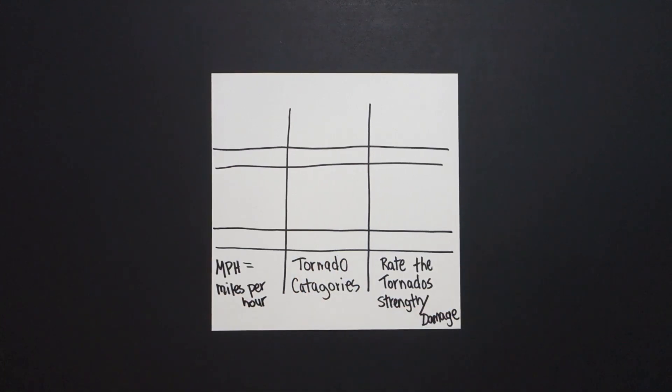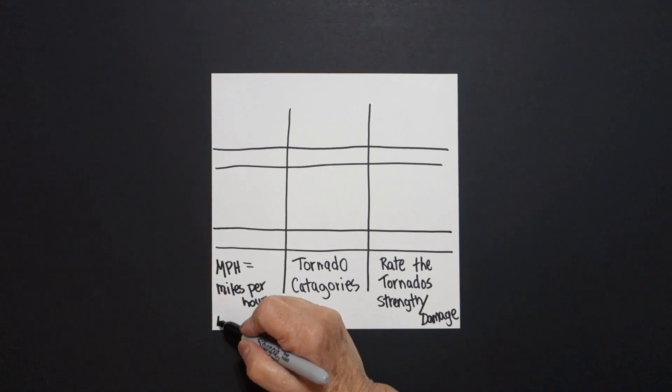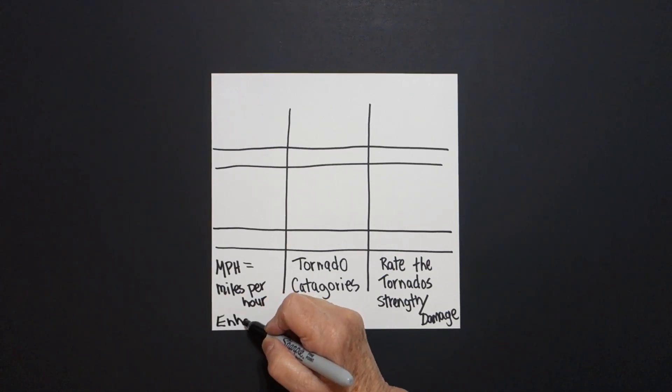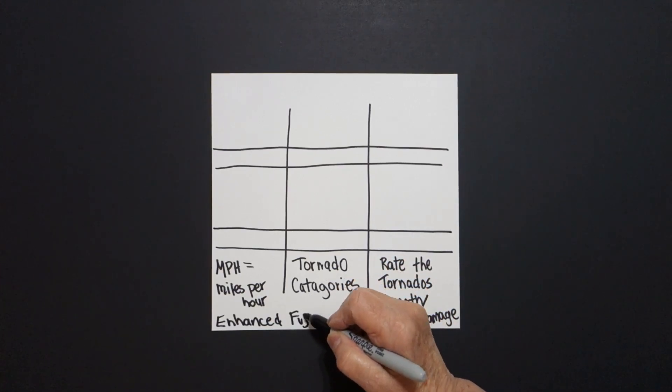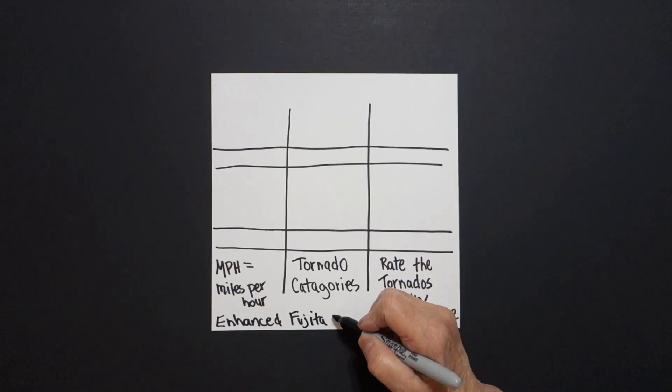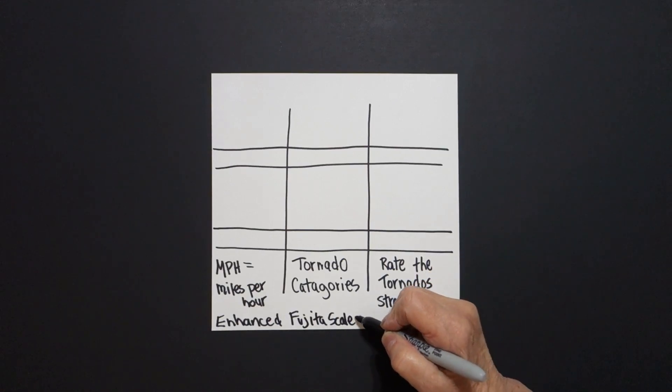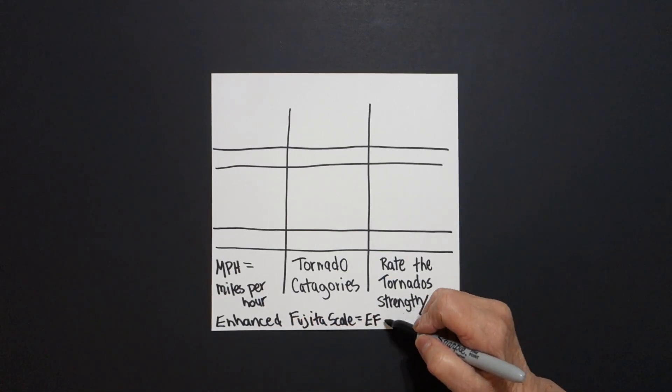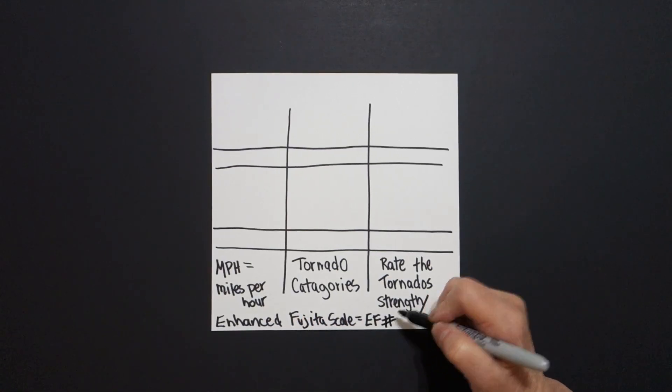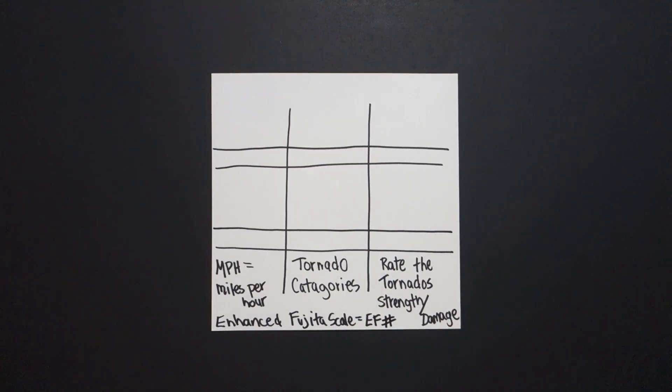Now, somebody had to think this up, and what it is called is the Enhanced Fujita, which I'm probably saying incorrectly, but Fujita Scale. And when you write it, I'm going to put equals E for Enhanced, F for Fujita, and then the number, and that tells you the strength of the damage.